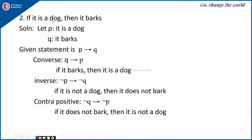Example 2: 'If it is a dog, then it barks.' Let P be 'it is a dog' and Q be 'it barks,' so the statement is P implies Q. The converse Q implies P is: 'If it barks, then it is a dog.' The inverse, negation of P implies negation of Q, is: 'If it is not a dog, then it does not bark.' The contrapositive, negation of Q implies negation of P, is: 'If it does not bark, then it is not a dog.'